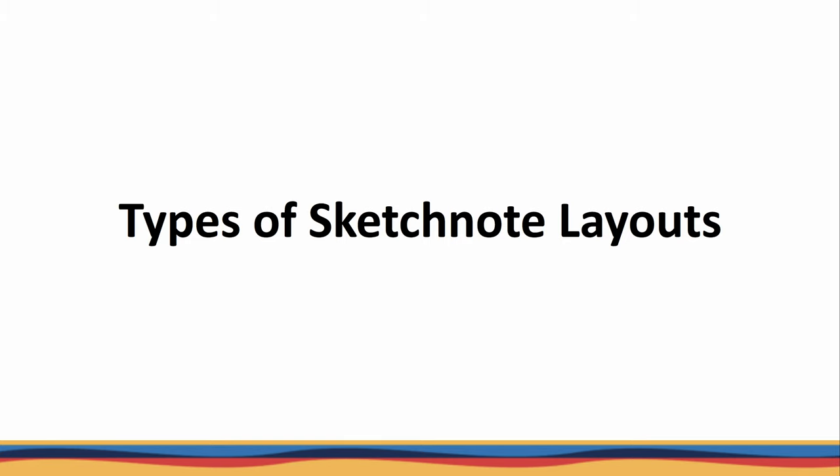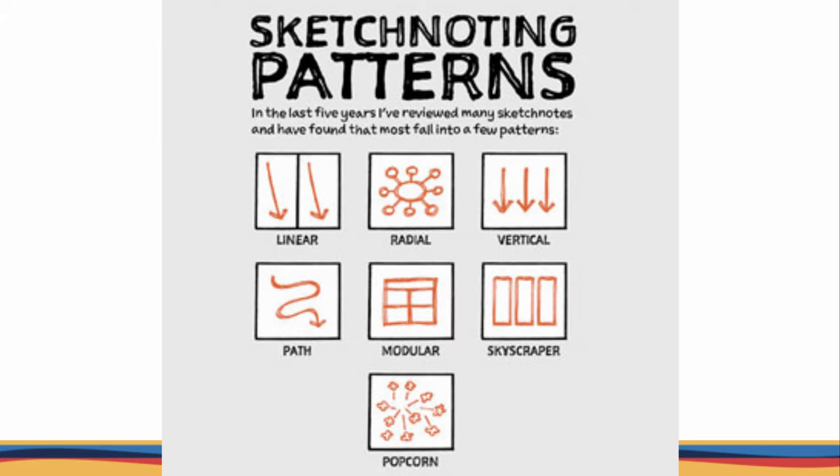Here are some different types of sketchnote layouts. One is linear, maybe with a couple of columns. Another one I use quite a bit is radial — you've got the central theme or topic with little bubbles on the outside. Another one I use a lot is vertical. Path is another one I typically like. And you have modular, skyscraper, and popcorn. I typically use radial, vertical, and path, but that's just me — you can use whatever works best for you or what feels good.